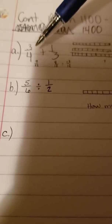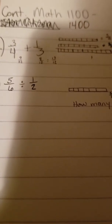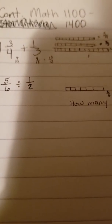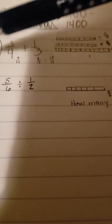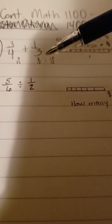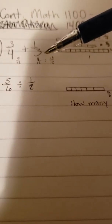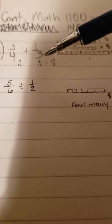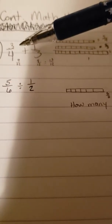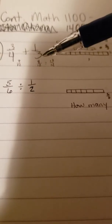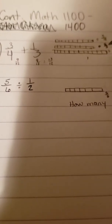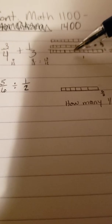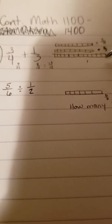On this first problem we have 3/4 plus 1/3. This could be a tricky problem to solve in your head or on paper. To represent it using rods, I saw that we have fourths and thirds in our denominator, so I decided we can find a common denominator. The closest number that goes into both 4 and 3 is 12, so we start with 12.